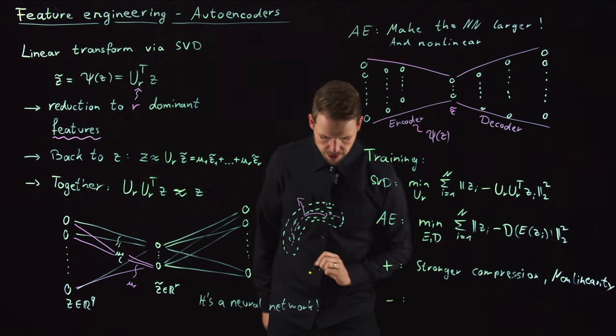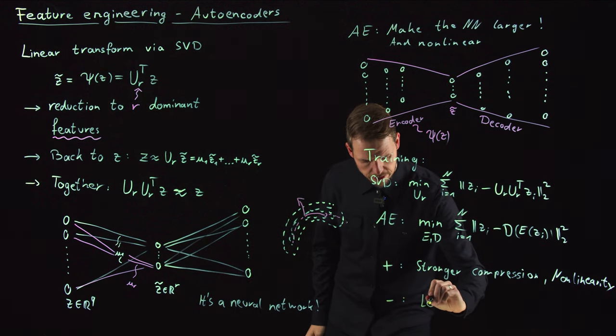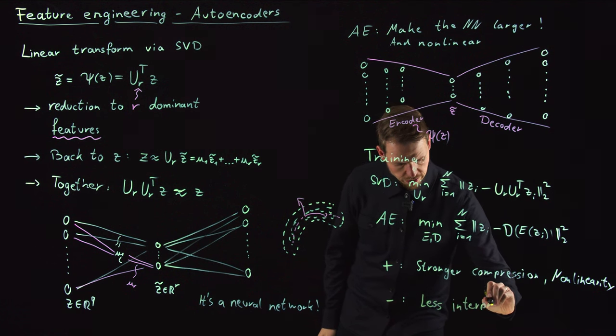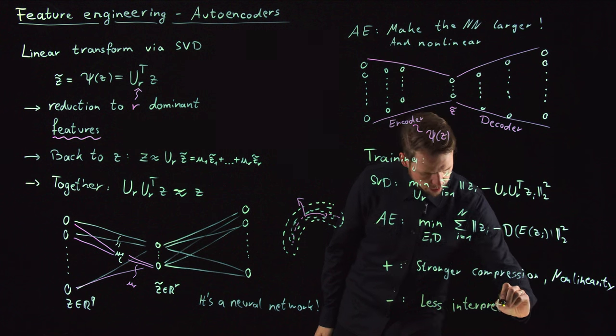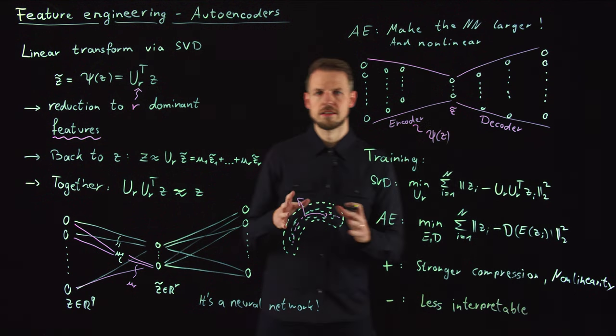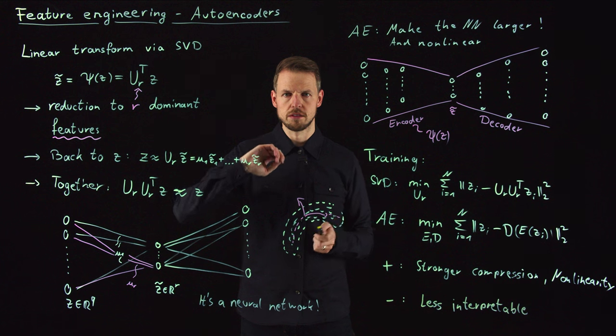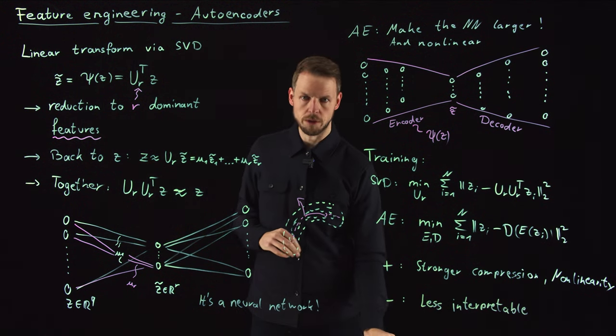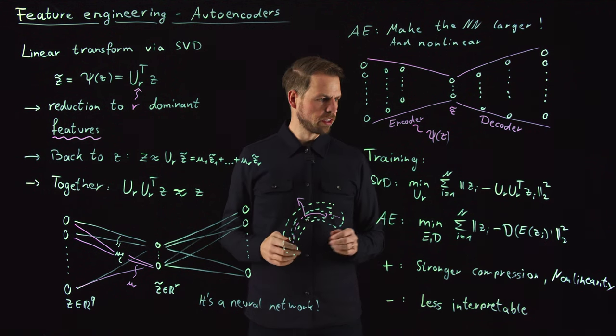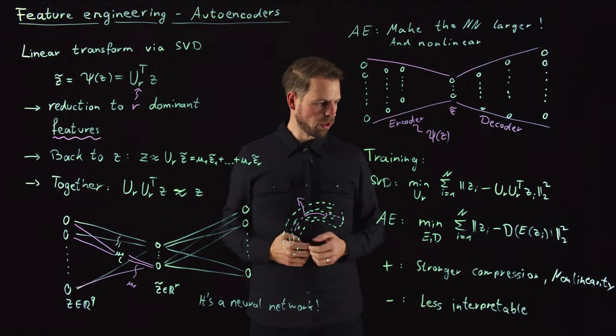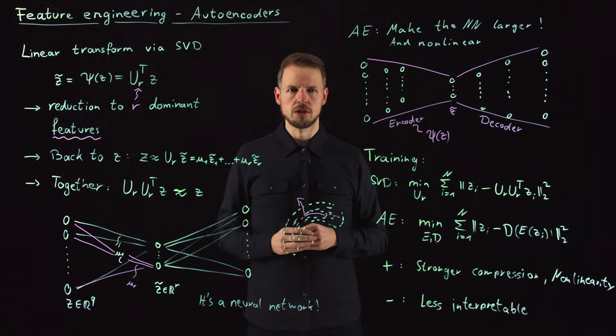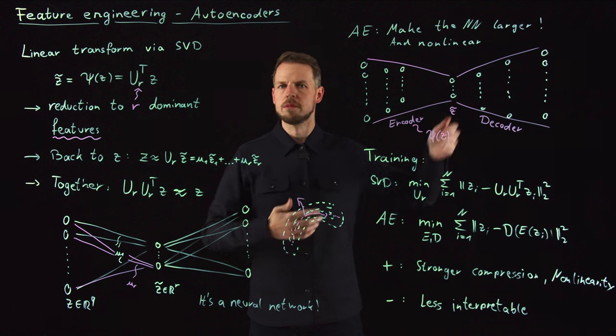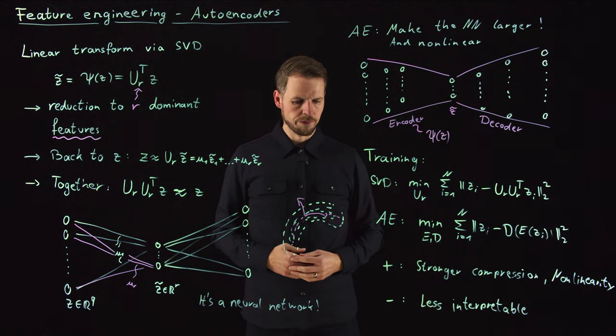The negative part is that it's obviously less interpretable because you get these abstract features. You cannot immediately say that these are, for example, eigenfaces in our example, or coherent structures in fluids. However, it's a very popular alternative that is getting more and more important in all sorts of applications where you want to compress states of dynamical systems and then proceed with learning time series or something related.